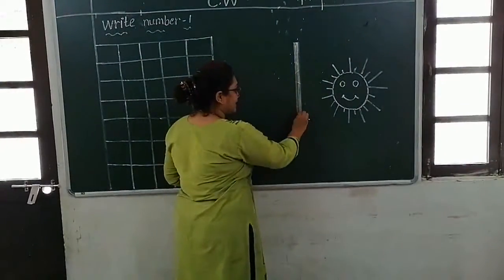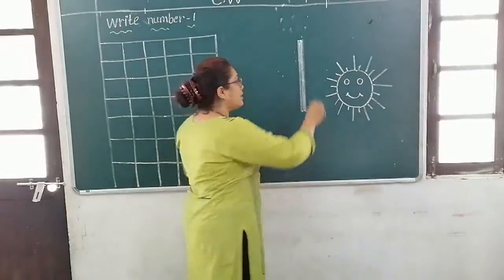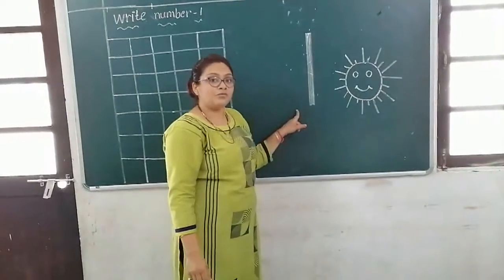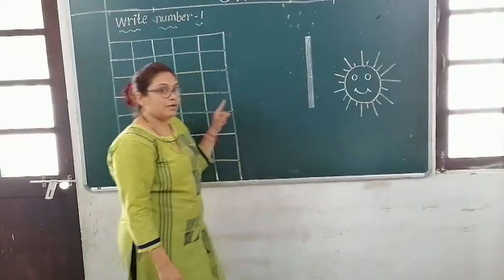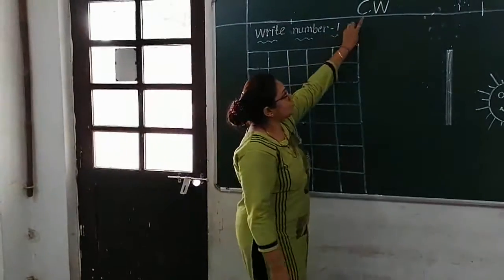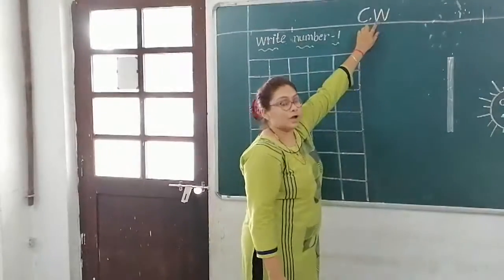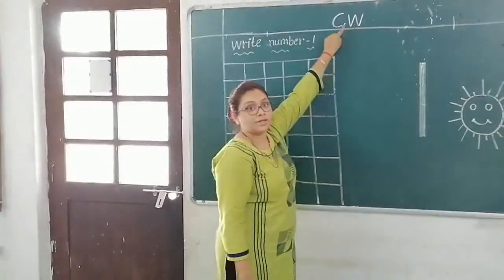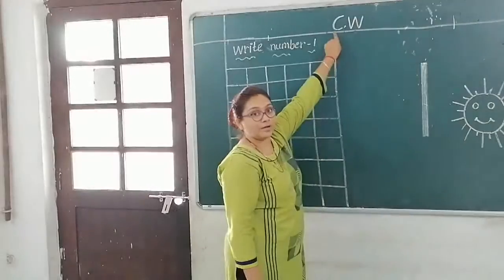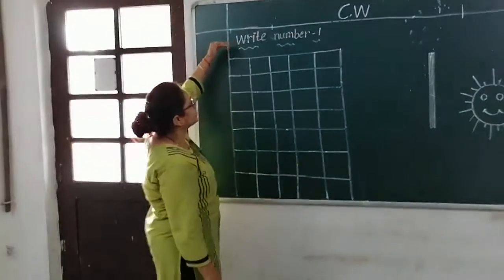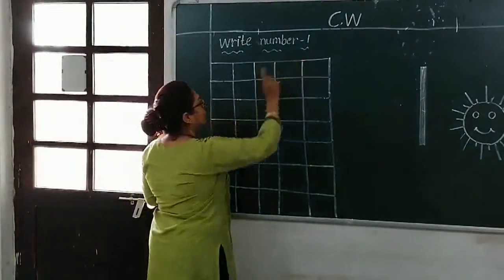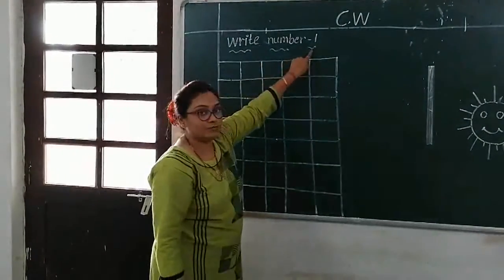Up to down — standing line — number one. Up to down — standing line — number one, one. Now in your square book, write how to write number one. You have to write C.W. — that means class work. Write down C.W., then on the next line write number one.